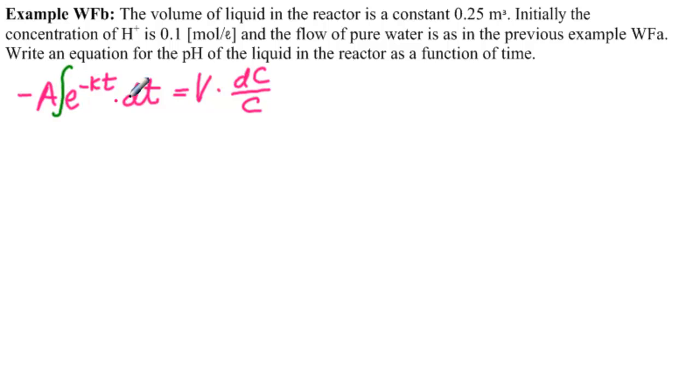Integrating, pull out the constants here. We have minus A, the integral of e to the minus kt dt is 1 over minus k times e to the minus kt. Over here we have the constant V times ln of C, and then we have our constant of integration, C prime.